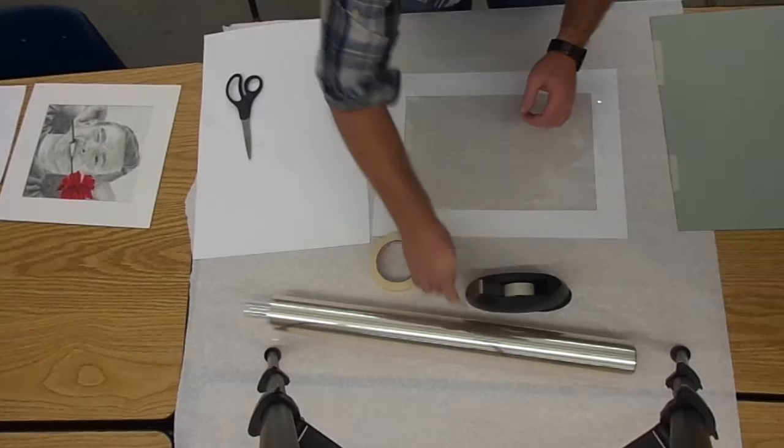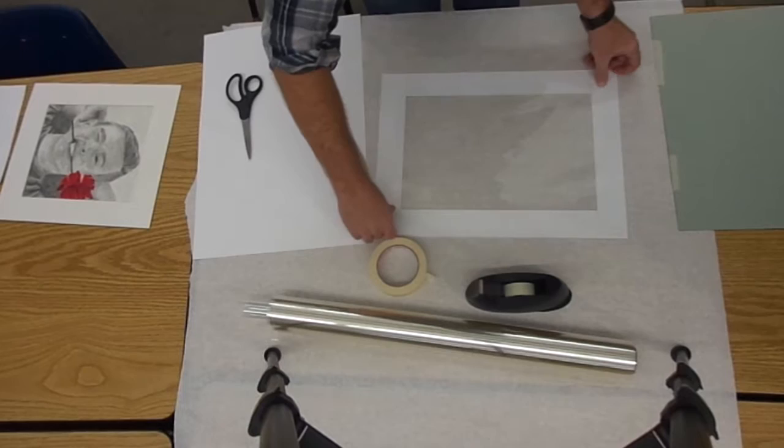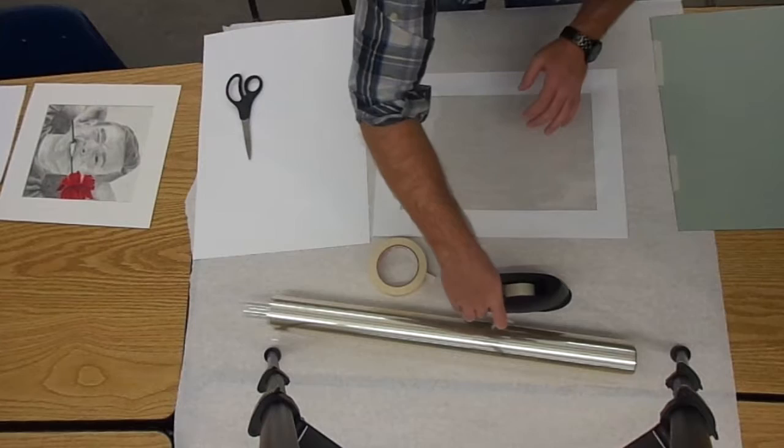I'm going to take another two pieces of tape. I'm going to put on the corners here, pull, and lay it down. Again, not too tight, but to make sure that this is pulled to where it's not loose.